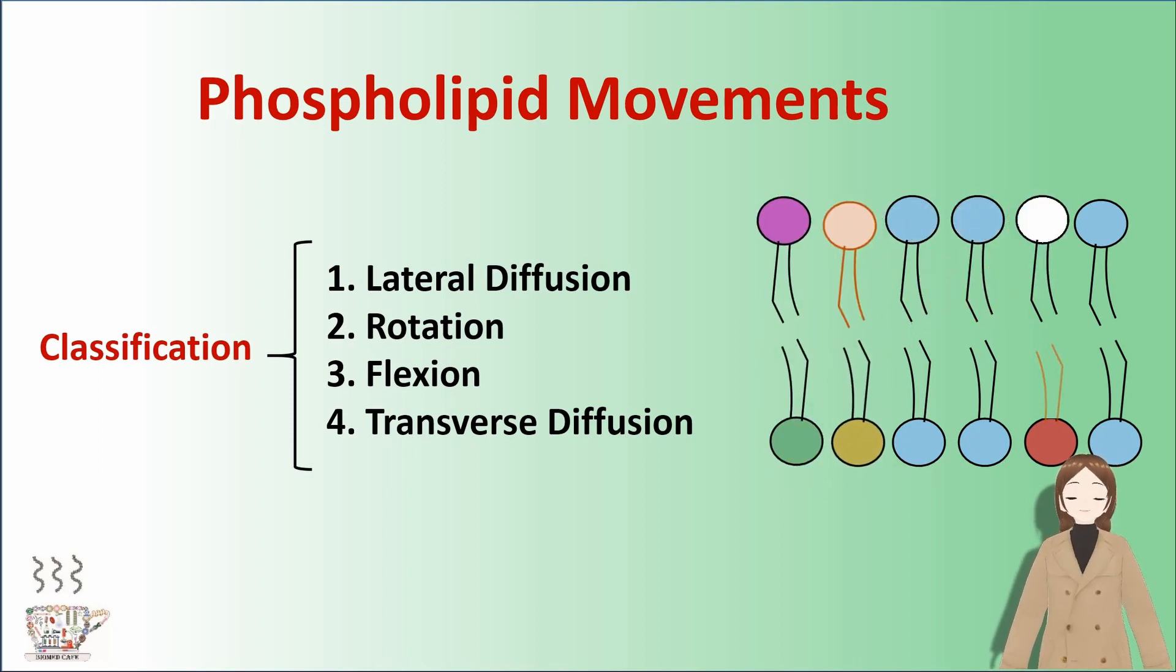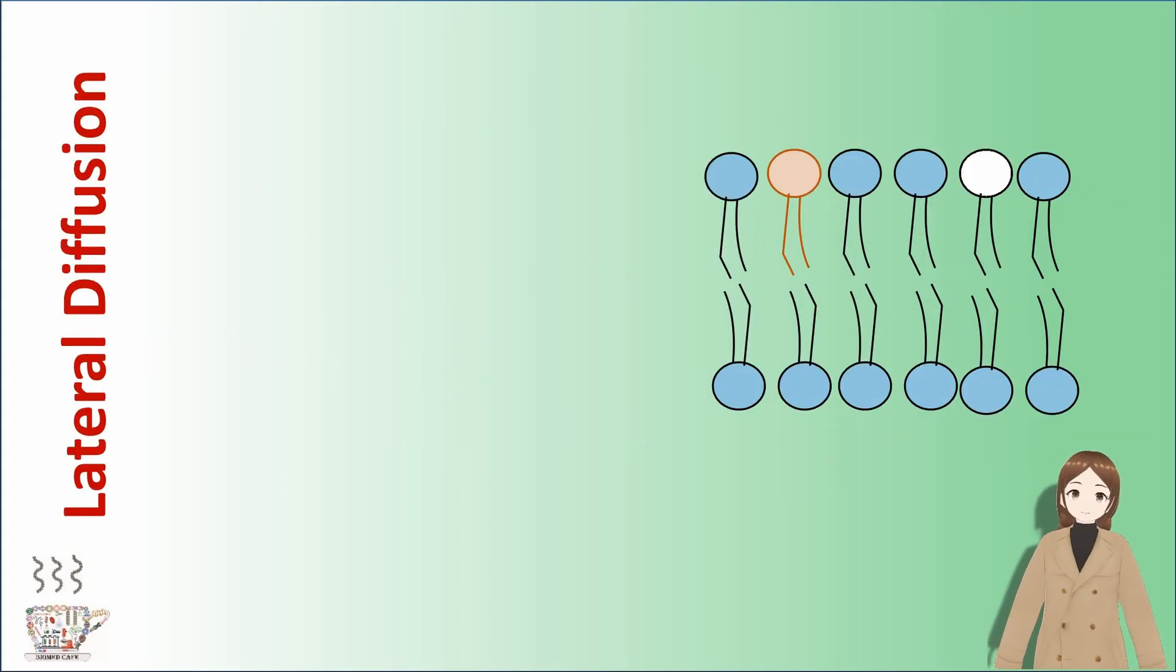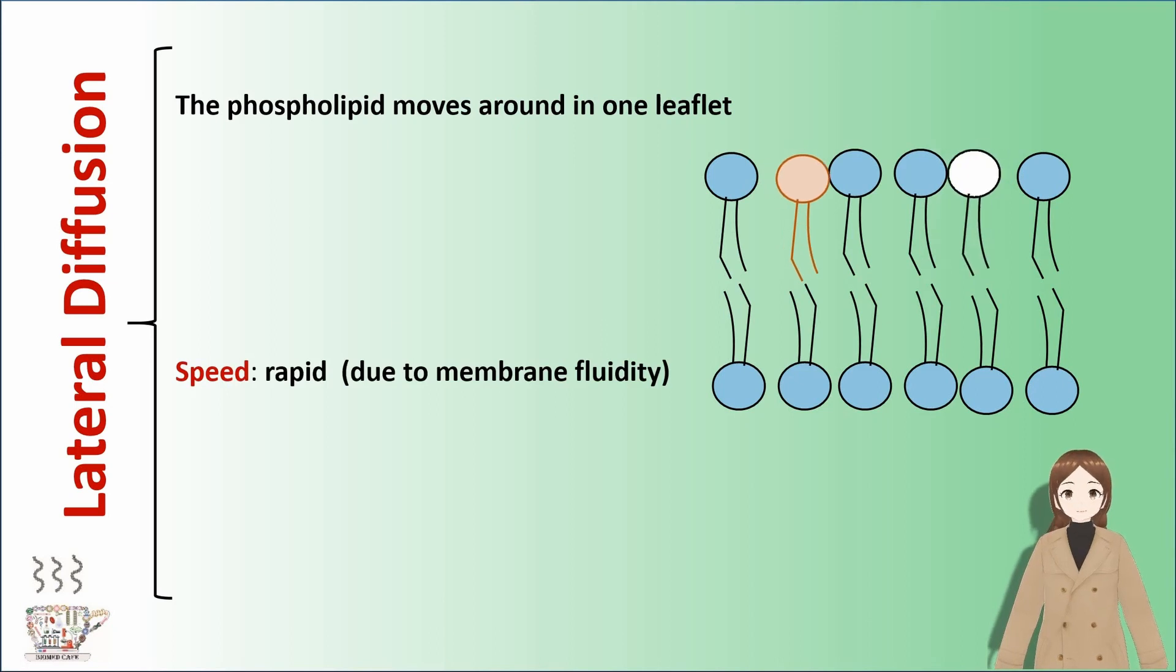Lateral diffusion, rotation, flexion, and transverse diffusion. The first movement is lateral diffusion. In this movement, the phospholipid moves around in one leaflet. The speed of this movement is rapid and is frequent.